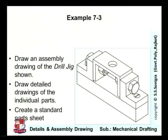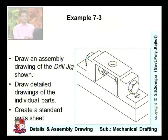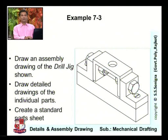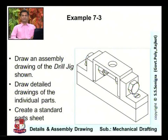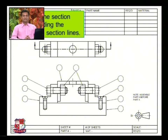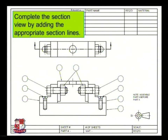Now we see one more example - example number 7.3. The data is given: draw an assembly drawing of a drill jig shown over here, draw detailed drawings of the individual parts, and create a standard parts sheet. This example is given in examinations and is asked many times. This is the assembly drawing of the complete given component. Complete the section view by adding the appropriate section lines.